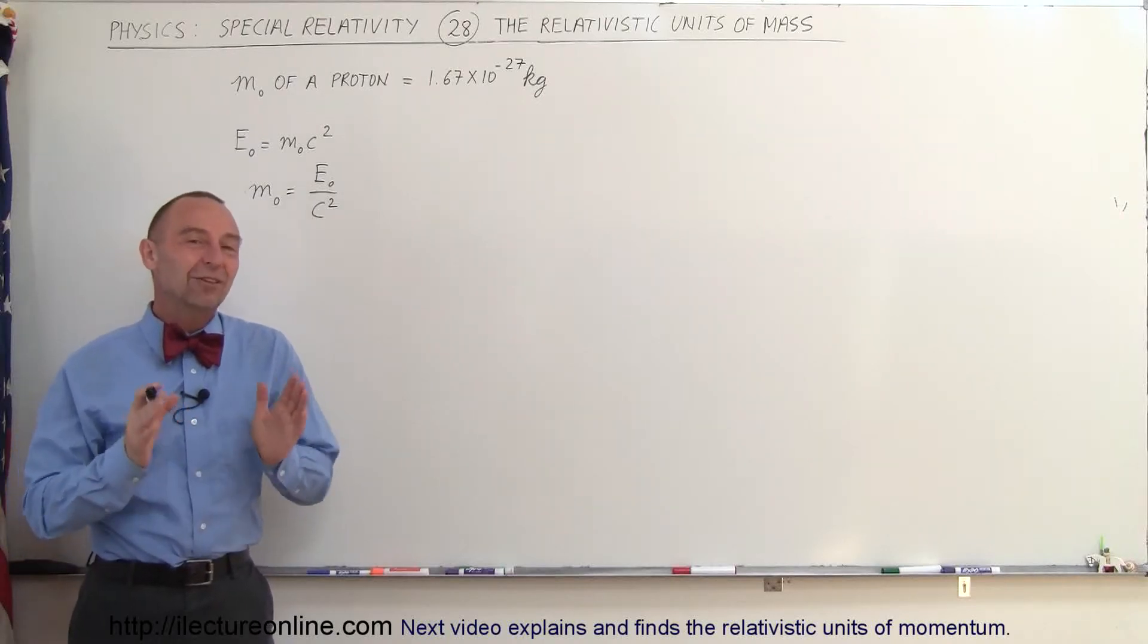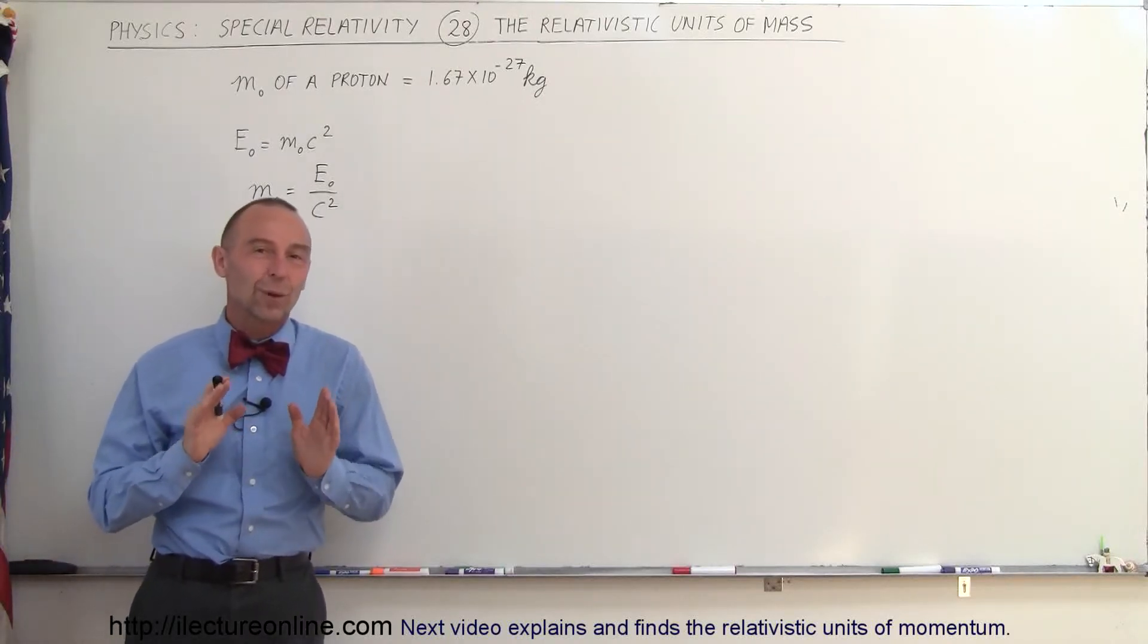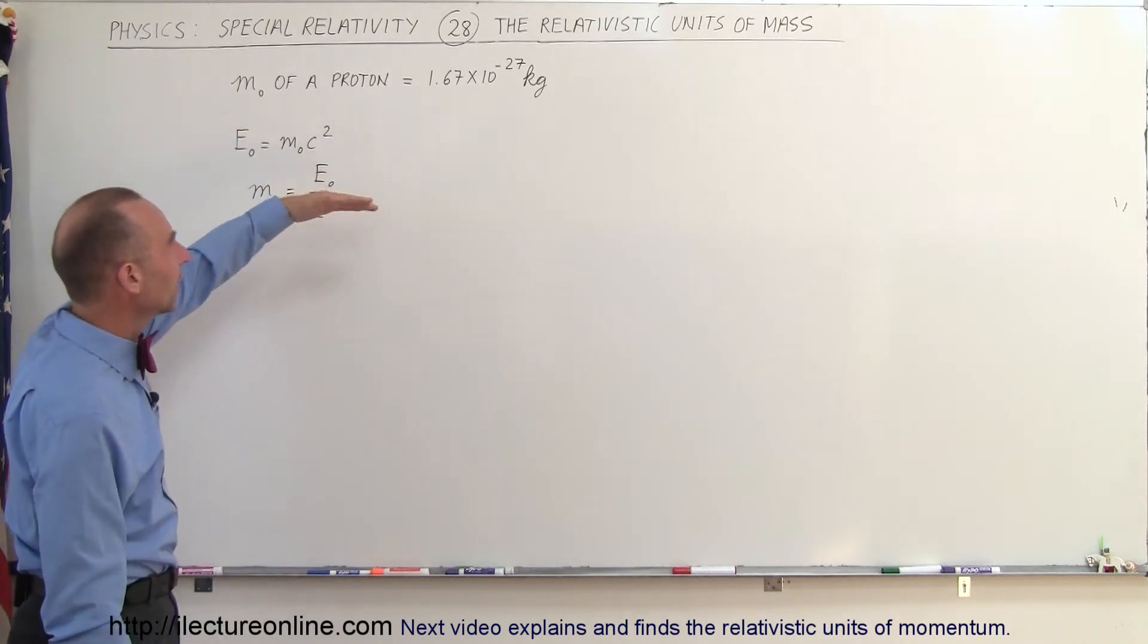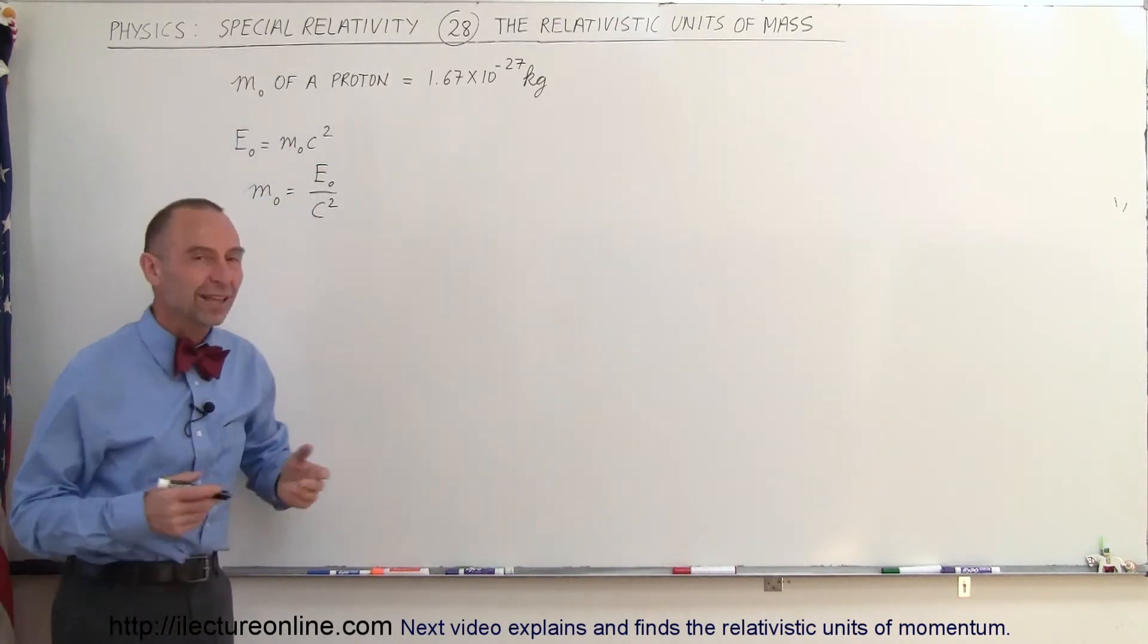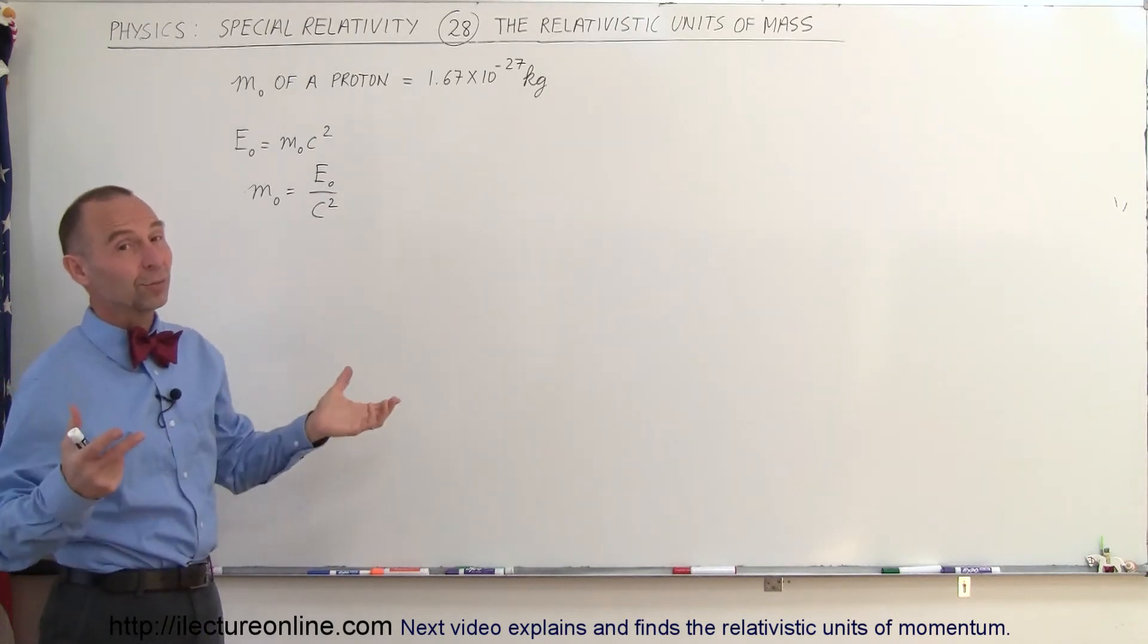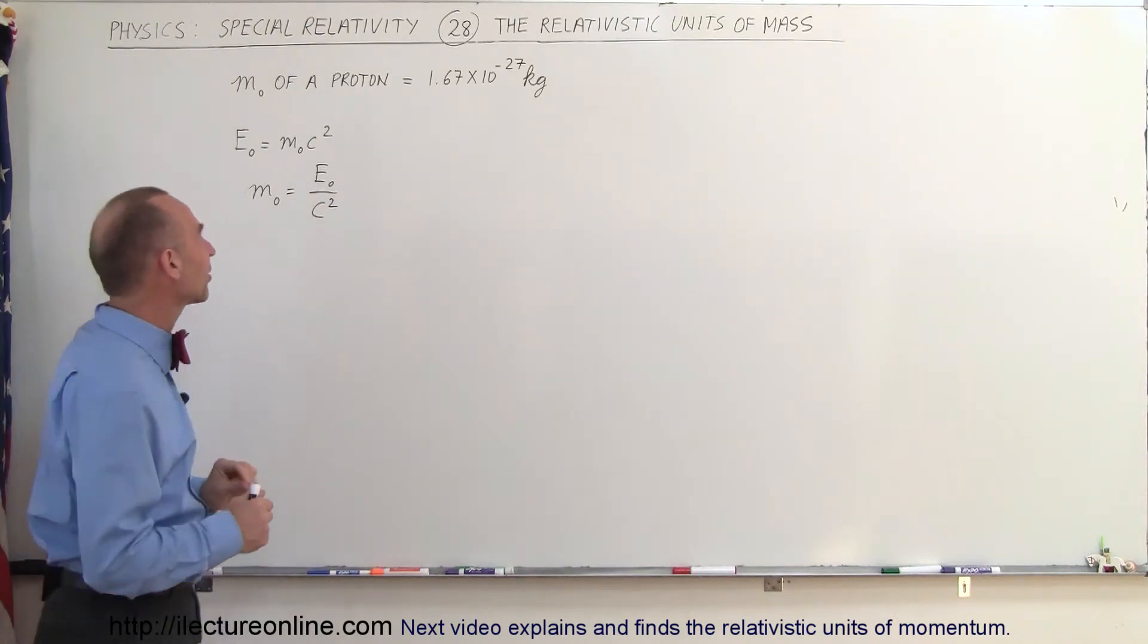Welcome to Electron Online. In this video, we're going to talk about the relativistic units of mass. So here we have the mass of a proton, which is 1.67 times 10 to the minus 27 kilograms, which is a really small number because a proton is a really small object.